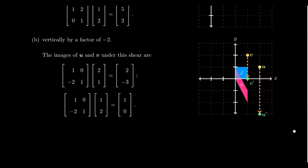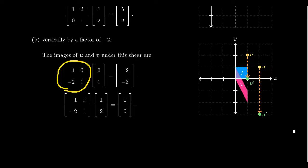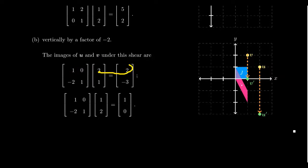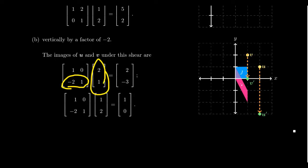Now let's look at a vertical shear by a factor of negative 2. When you have a vertical shear, this corresponds to multiplying by a unit lower triangular matrix — the matrices from the forward phase of Gauss-Jordan elimination. This matrix will shear the plane vertically by a factor of negative 2. When we multiply by vector u = (2,1): the first row gives back 2 — the x-coordinate didn't change — and the second row gives negative 4 plus 1, which is negative 3. So u moves from (2,1) down 4 units to (2, negative 3).